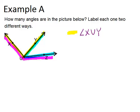So X, U, Y. Or you could go in the other direction and end up with angle Y, U, X. So it said label each one two different ways. Here are two ways of labeling that yellow angle.